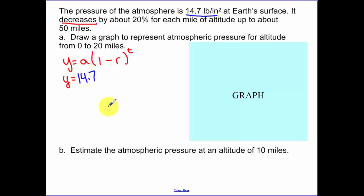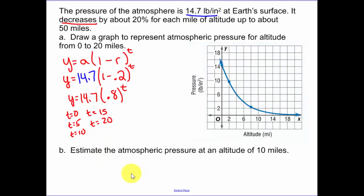Then, 1 minus our rate, I'm decreasing at 20%, so that's 0.2. Remember, your rate has to be a decimal. So therefore, there is your equation. Draw a graph. Putting it in your calculator from 0 to 20 miles, you might put in t equals 0, t equals 5, t equals 10, t equals 15, and t equals 20. So just giving me some different points that we can now graph. That's an idea of what our graph looks like. Notice, it's a decay function.